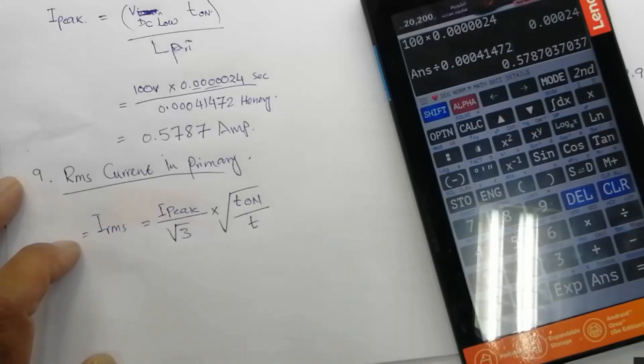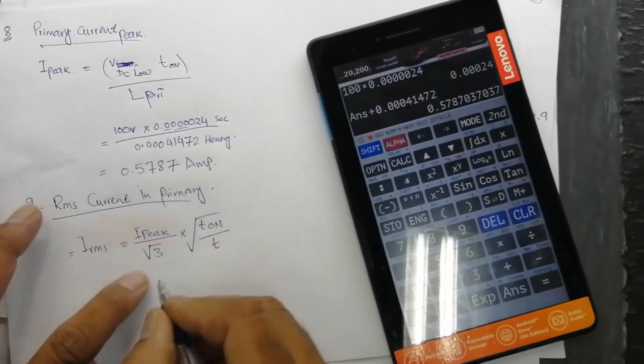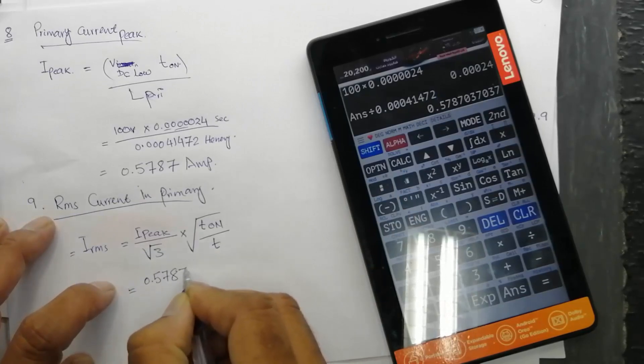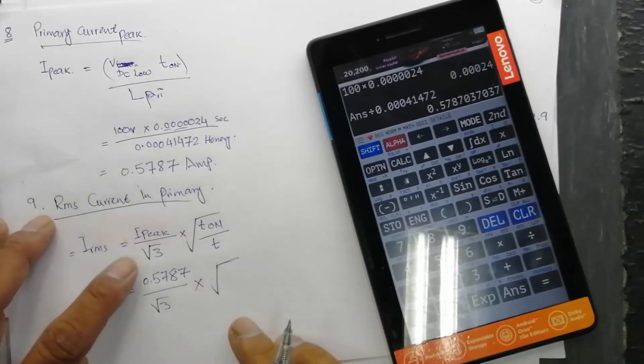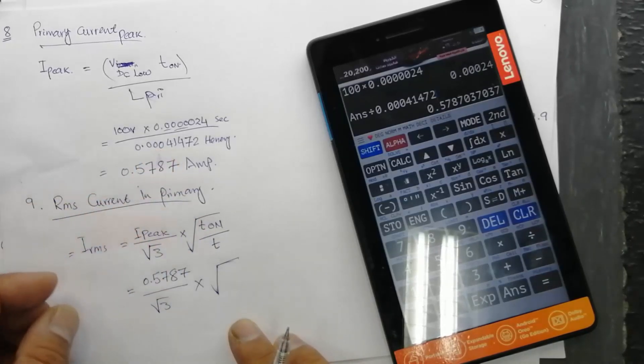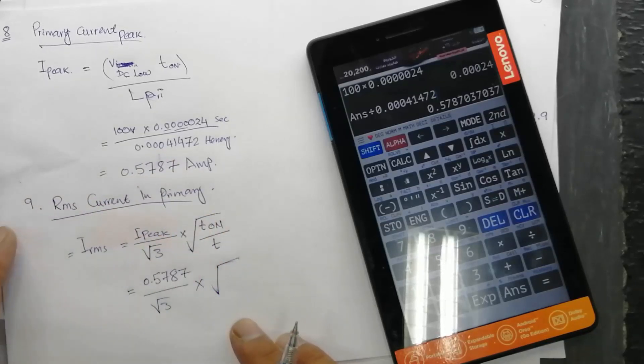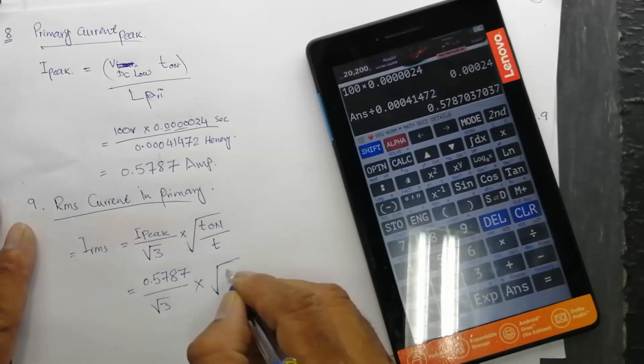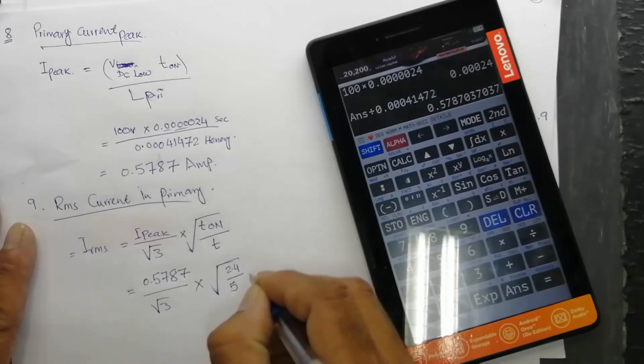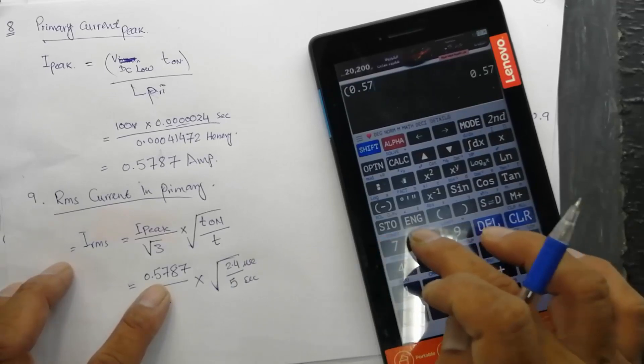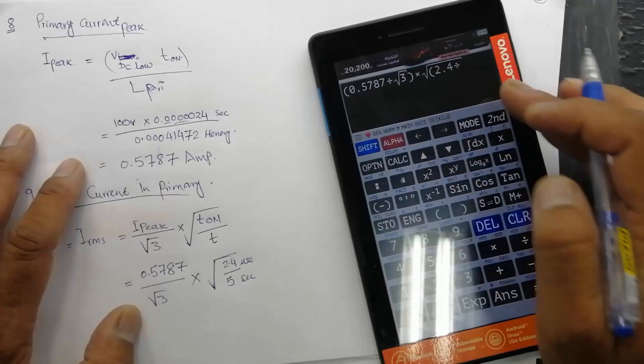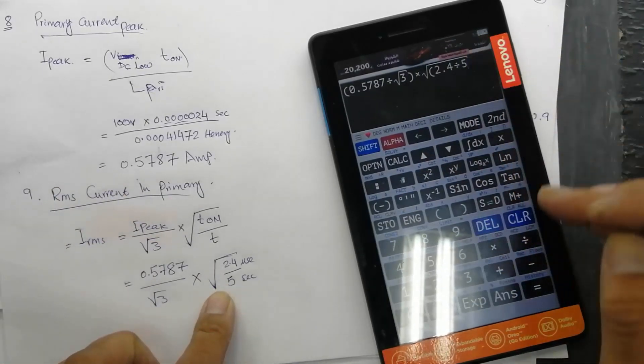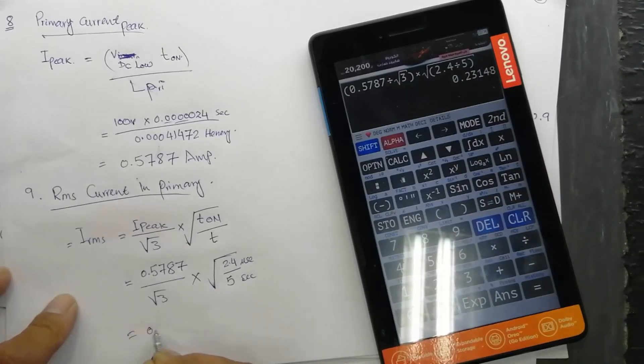We can calculate it very easily: 0.5787 divided by square root of 3, multiplied by time on 2.4 divided by 5 microseconds. 0.5787 divided by square root 3 divided by 5, bracket closed. It is 0.23148 ampere I_rms.